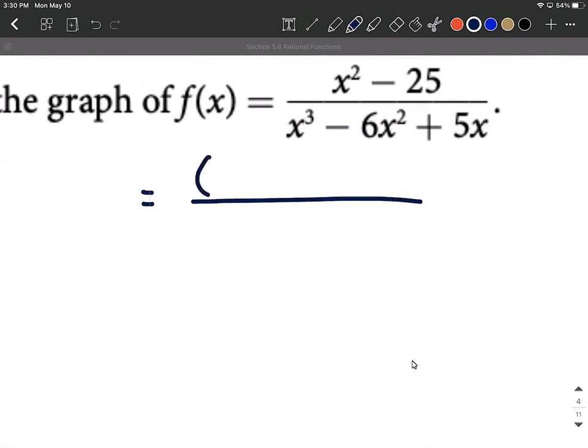So to start out in the numerator, looks like a difference of squares. So it can be x plus 5 x minus 5. For our denominator to get started on this, I'm going to start with a common factor. They all have x's in common. Remove that and that'll leave us with x squared minus 6x plus 5.